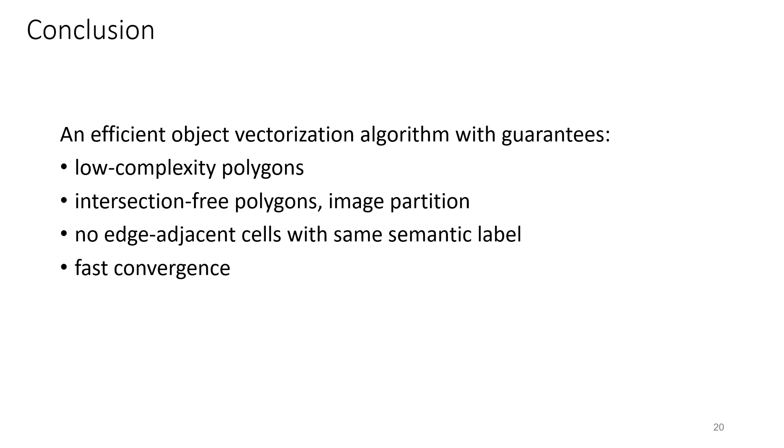To conclude, we introduced an object vectorization algorithm which outputs low complexity polygons, with geometric guarantees of being intersection-free and forming an image partition, and semantic guarantees to have no adjacent cells with the same label. Finally, our local optimization scheme offers fast convergence.